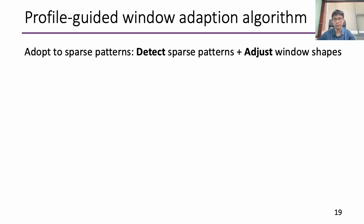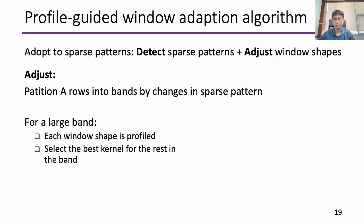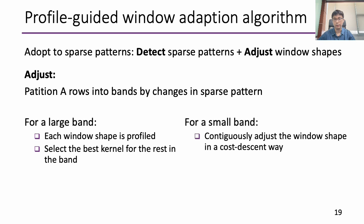To adjust the window shapes, we partition A rows into bands by changes in row lengths. For a large band, we profile all window shapes as a head and select the best kernel for the rest. For a small band, we continuously adjust the window shape in a coordinate-descent way.